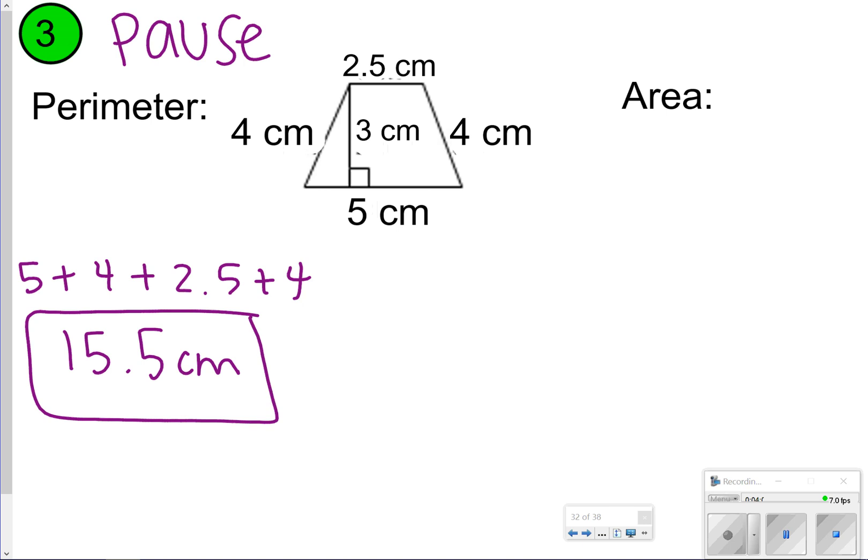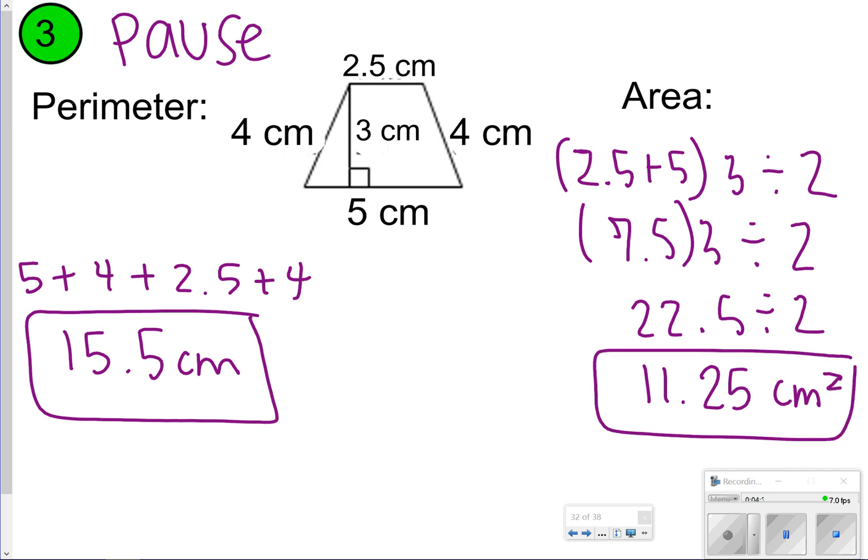For the area, a little bit different—you're going to be adding the bases, so that's 2.5 plus 5, times the height which is 3, and then dividing by 2. 2.5 plus 5 is 7.5. 7.5 times 3 is 22.5, and 22.5 divided by 2 is 11.25. That's going to be your answer in centimeters squared. How'd you do?